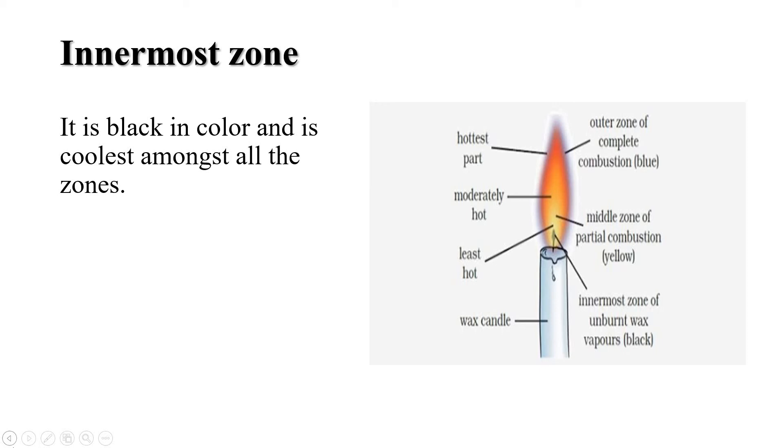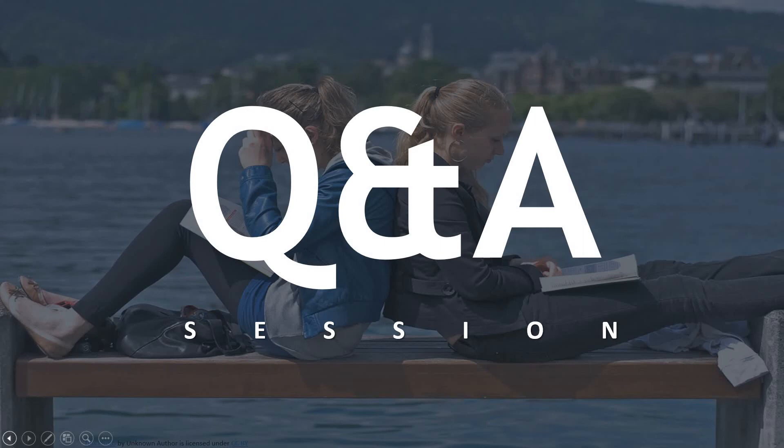And the last part of the flame is the lowest blue zone. This zone is located at the base of the flame. The blue color of this zone is due to the burning of the carbon monoxide produced in the dark zone.